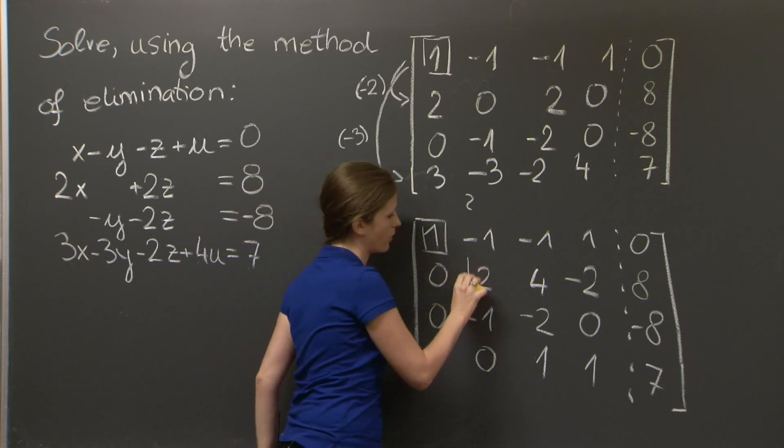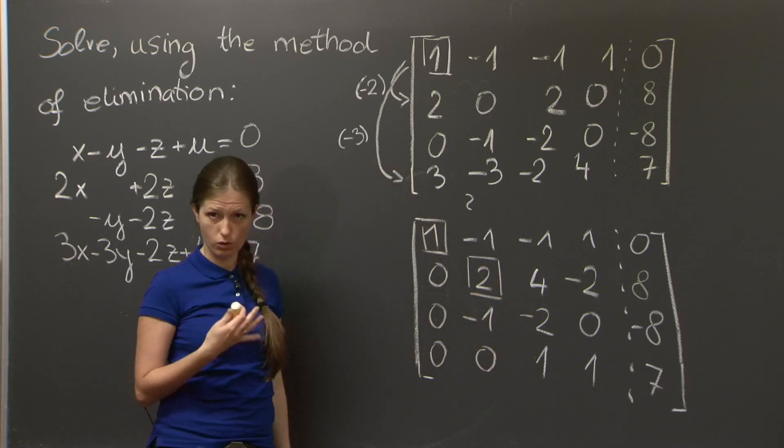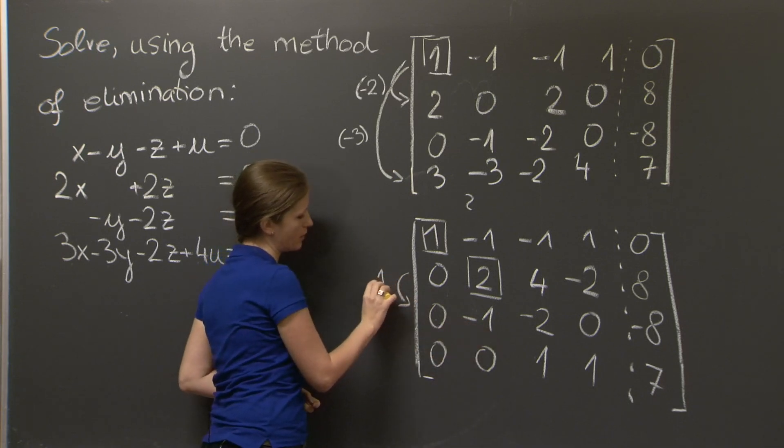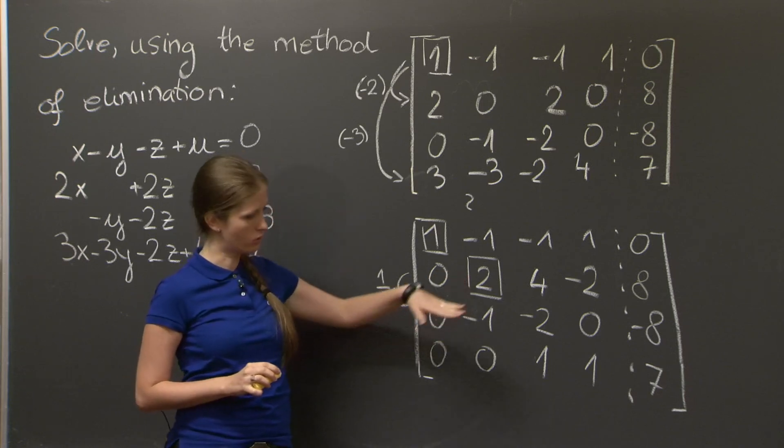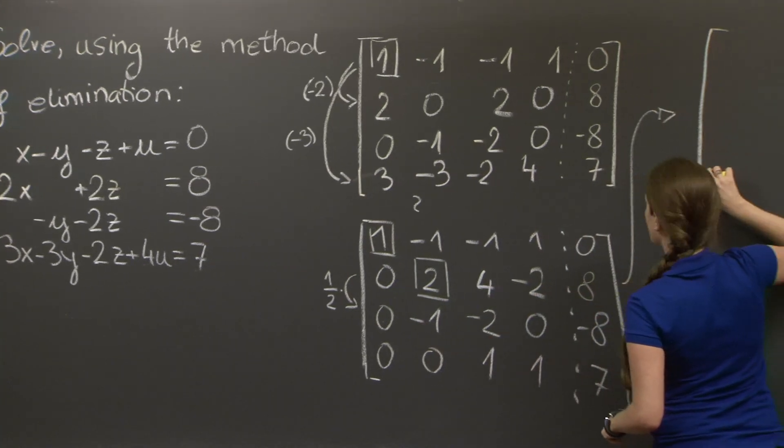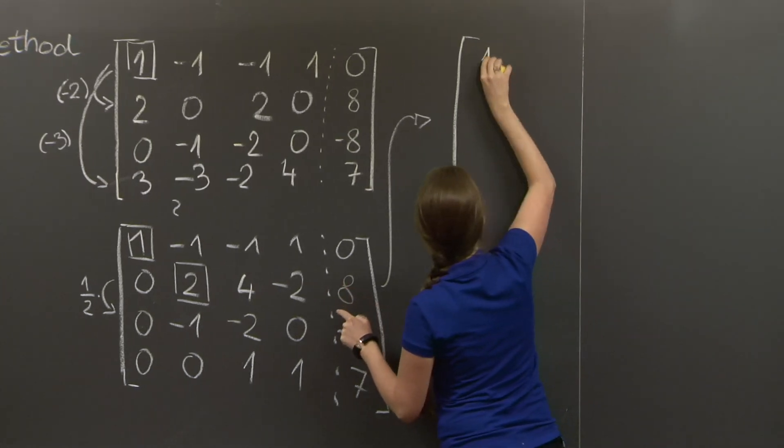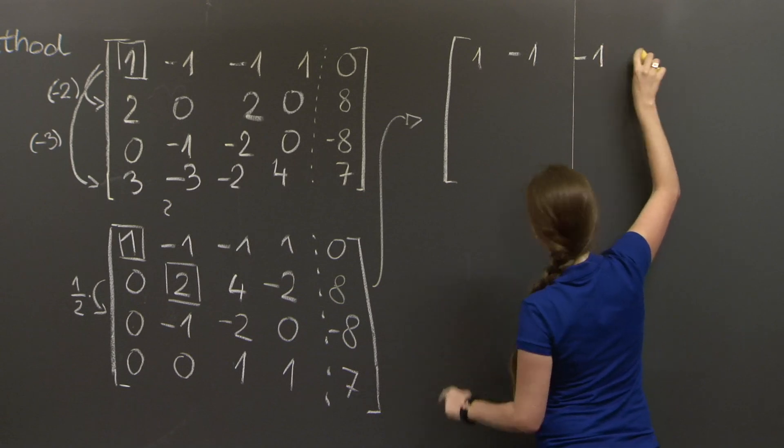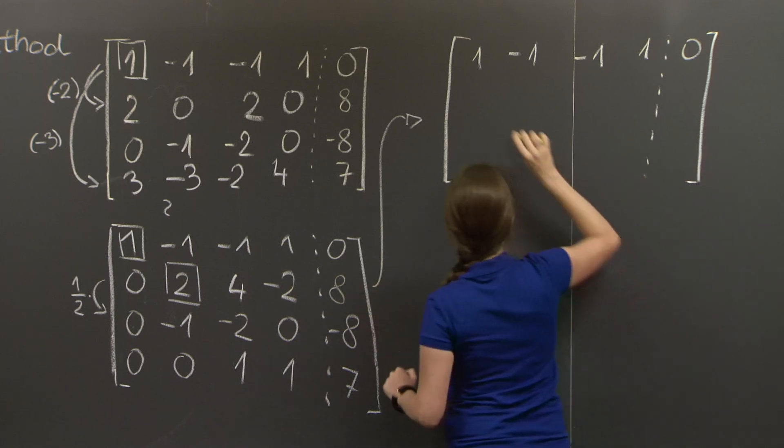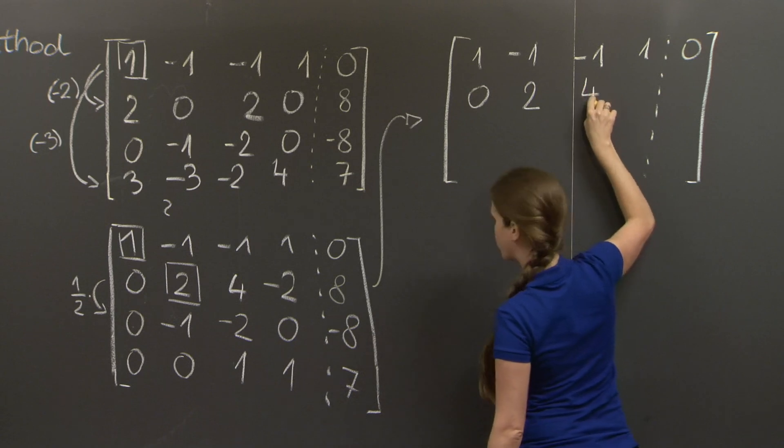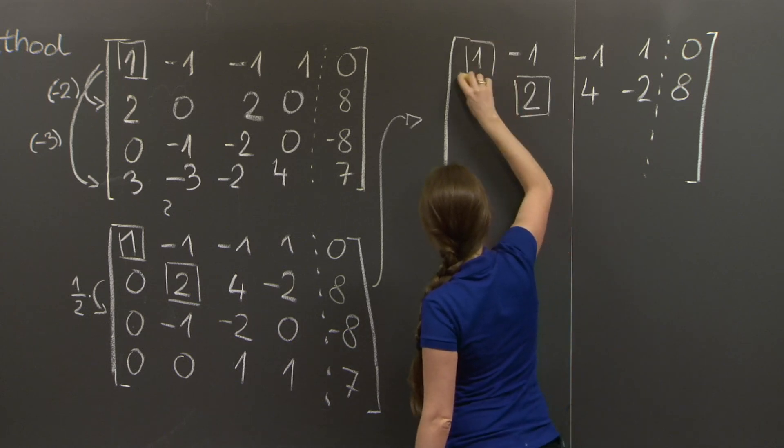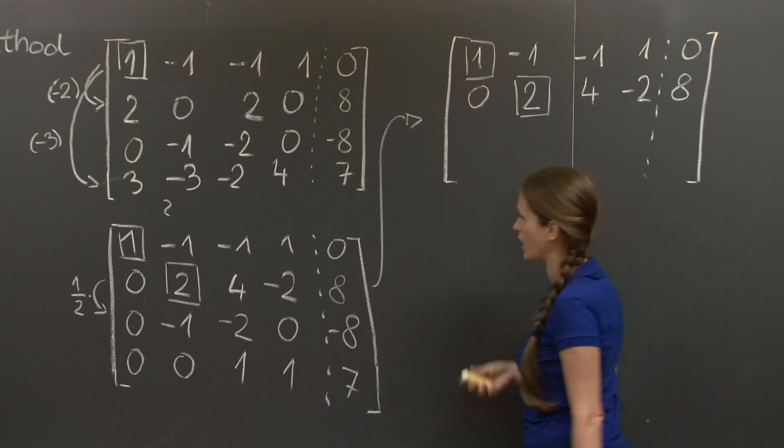Now let's do the same to the second column. This is going to be our pivot, the number that we use to get rid of numbers under it. And we see that to get rid of this number here, we will need to multiply it with 1 half. So multiply the whole second row with 1 half and add it to the third row. The matrix that we get will have the first row stay the same: 1, minus 1, minus 1, 1, 0. The second row stays the same: 0, 2, 4, minus 2, 8.